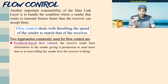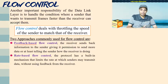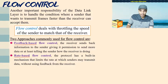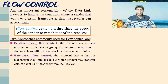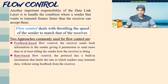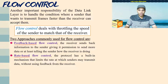In feedback-based flow control, the receiver explicitly tells the sender how much it can send — for example, send 10 frames if buffer space is available, or only 2 frames if resources are constrained. The sender adjusts its rate based on that feedback. The second approach is rate-based flow control, where there is no need for the receiver to explicitly tell the sender to slow down. Instead, the protocol has a built-in mechanism limiting the rate at which senders may transmit, without feedback from the receiver.